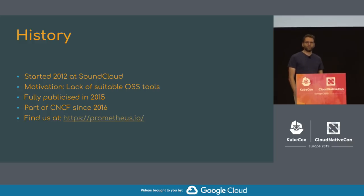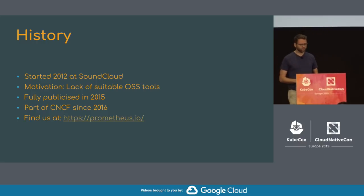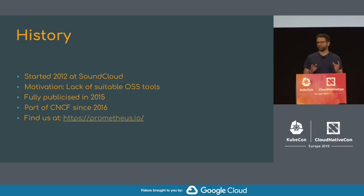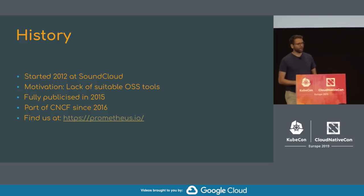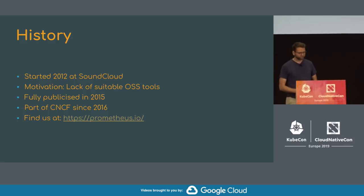Prometheus started in 2012 at SoundCloud. That was when both I and Matt came from Google and tried to make SoundCloud more stable. SoundCloud already had a cluster scheduler before Docker even existed — so obviously no Kubernetes yet, no Grafana yet. The open source monitoring tools back then weren't suitable for dynamic cluster scheduling with containers, which led to the birth of Prometheus. It was open source from day zero, but we only really published it in 2015. In 2016, it became the second member project of the Cloud Native Computing Foundation, after Kubernetes. You can find us at prometheus.io, and at slash community you'll find ways to get help and become a contributor.